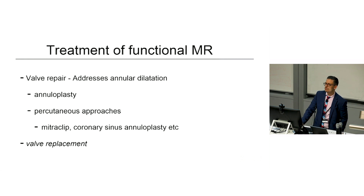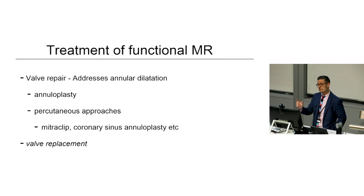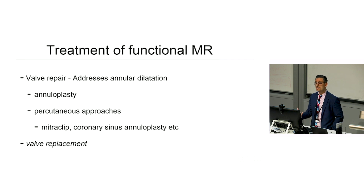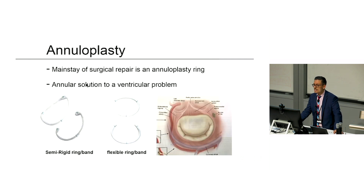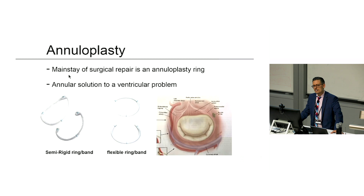How do we treat it? Surgically, we have tried to repair these valves — we can address annular dilatation with an annuloplasty ring to reduce and remodel the annulus. There are also percutaneous approaches including the mitral clip and coronary sinus annuloplasty devices, and valve replacement is obviously very reliable. Annuloplasty has been the mainstay of surgical repair for functional and ischemic MR, but it's really a ventricular problem and we're answering it with an annular solution — it doesn't make a whole lot of sense, but it seems to work reasonably well.